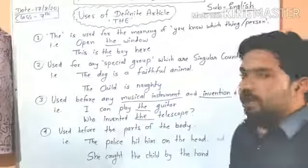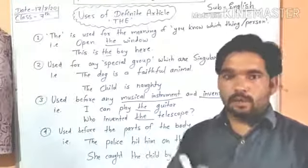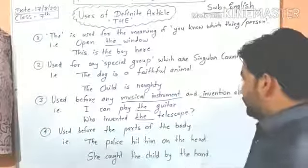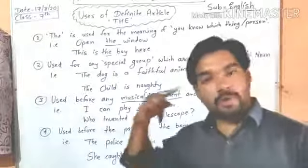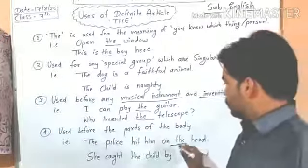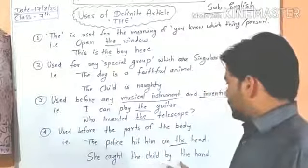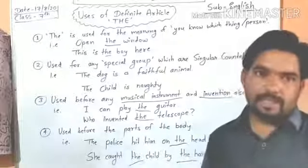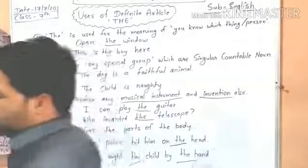The fourth use: 'the' is used before parts of the body. For example: 'The police hit him on the head' — police ने उसको सर पर मारा, so 'the' is used before 'head.' Another example: 'She caught the child by the hand' — यहाँ 'the child' specific child को refer करता है और 'the hand' body part को। You can note it down.